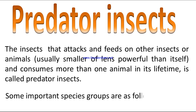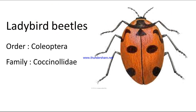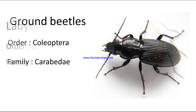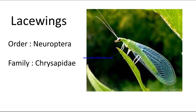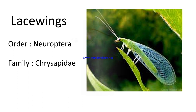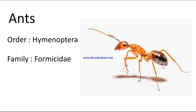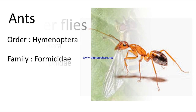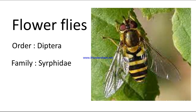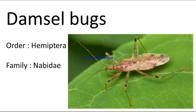Some important species groups are as follows: Lady bird beetles, Order Coleoptera, Family Coccinellidae; Ground beetles, Order Coleoptera, Family Carabidae; Lacewings, Order Neuroptera, Family Chrysopidae; Ants, Order Hymenoptera, Family Formicidae; Flower flies, Order Diptera, Family Syrphidae; Damsel bugs, Order Hemiptera.